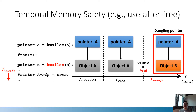Let's look at what Temporal Memory Safety is. We will consider the use-after-free vulnerability as an example. Temporal Memory Safety is a property that ensures all memory dereferences are valid at the time of the dereference, which means the pointed-to object must always be the same as when the pointer was created. This can be broken when an object that a pointer is pointing to is replaced with another object while the pointer is pointing to the same address. From the time when the pointer is not pointing to a valid object, we call such a pointer a dangling pointer.